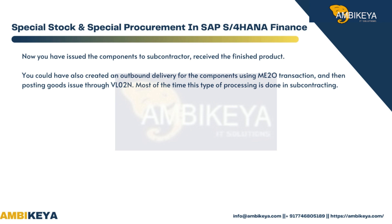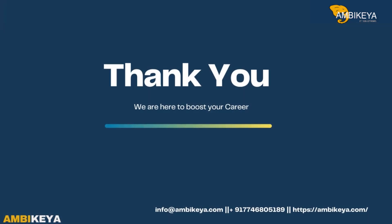You can post a goods receipt against the purchase order to receive the finished goods from the vendor. Now you have issued the components to the subcontractor and received the finished product. You could have also created an outbound delivery for the components using the ME2O transaction and then posted goods issue through VL02N.